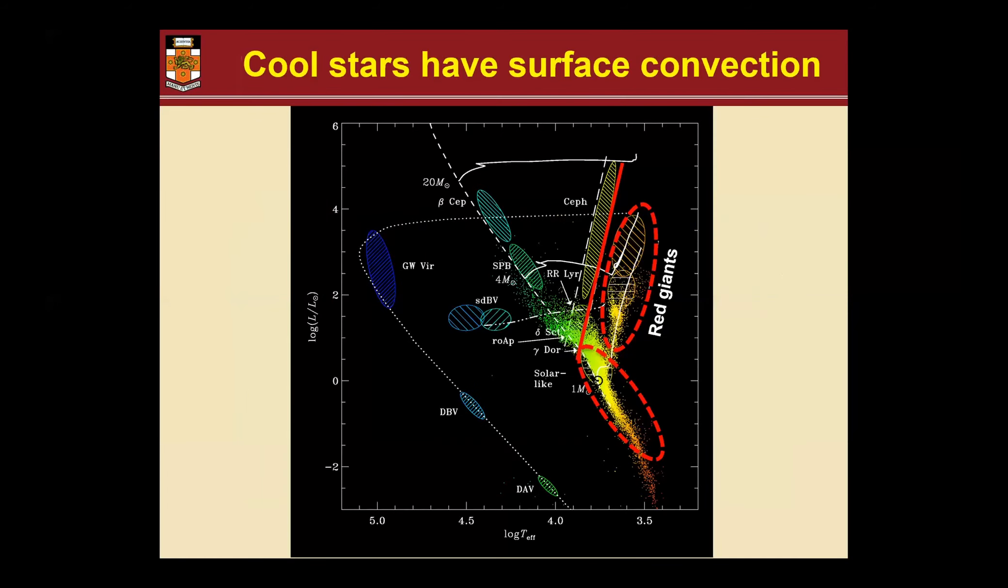This is the HR diagram seen from an asteroseismologist. All the hatched regions are places where stars pulsate, but I will concentrate on this region, what we call the cool stars - everything that is cooler than that vertical red line, because these stars have in common that they have convection in the envelope, like giants and cool dwarfs.